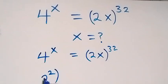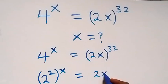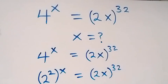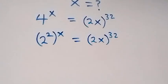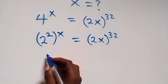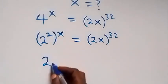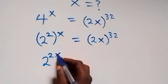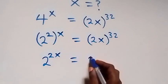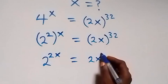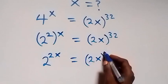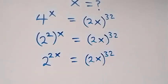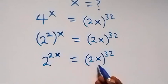Then (2²) raised to power x now equals to (2x) raised to power 32. Here this power we multiply from the law of indices, then we have 2 raised to power 2x now equals to (2x) raised to power 32. From here, we have 2x in common — let's use a letter to represent that.